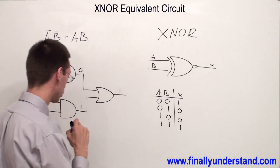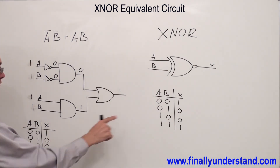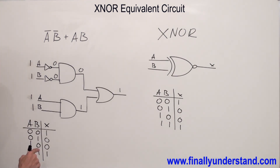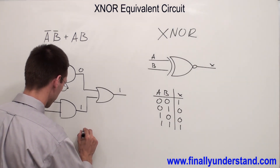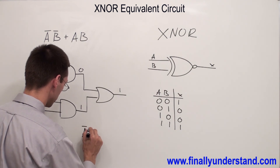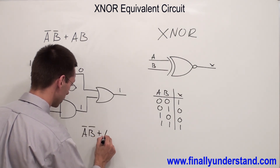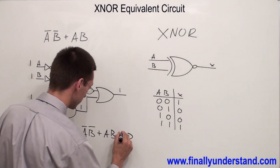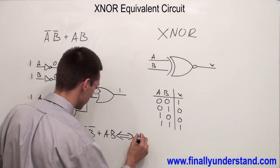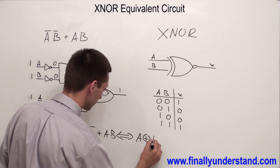If you compare these two truth tables, you will see that both of them are identical. That's why we say that A'B' OR AB is equivalent to the exclusive NOR gate.